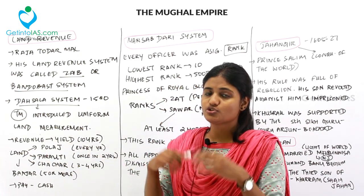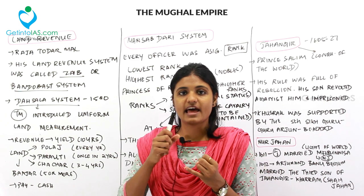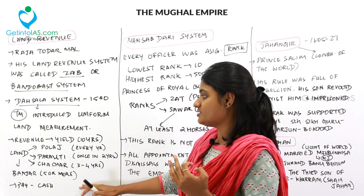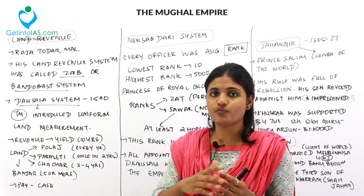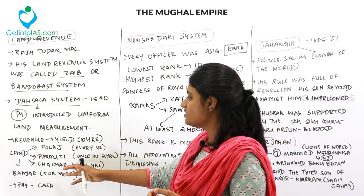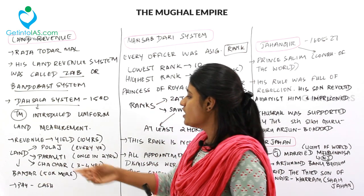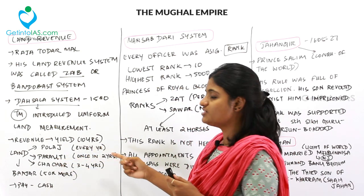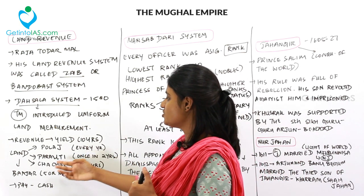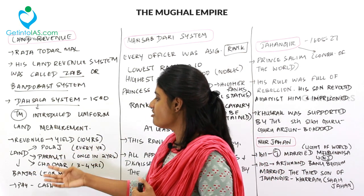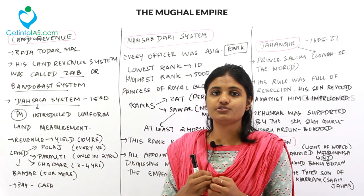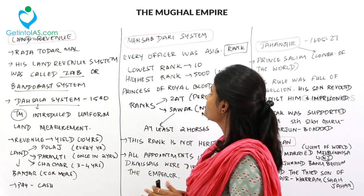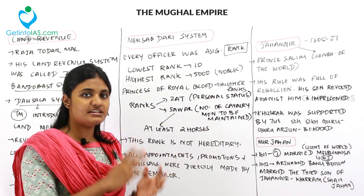Under Sher Shah's system, land was divided into three categories (good, medium, bad), but under Akbar's Dahsala system it was divided into four: Polaj (cultivated every year), Parauti (once in two years), Chachar (three to four years), and Banjar (five or more years). All land revenue was to be paid in cash.